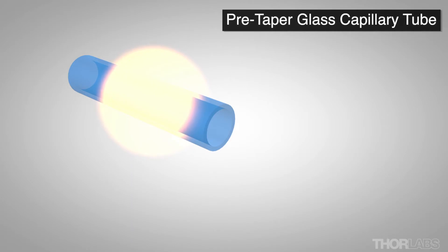First, a glass capillary tube is pre-tapered to match the size of the bundled bare fibers.